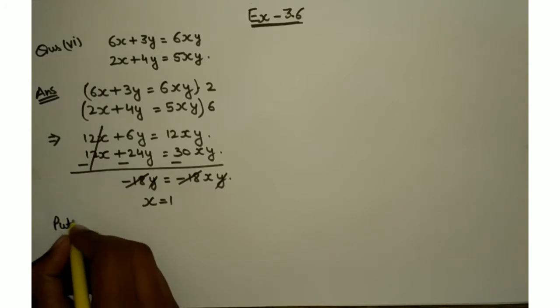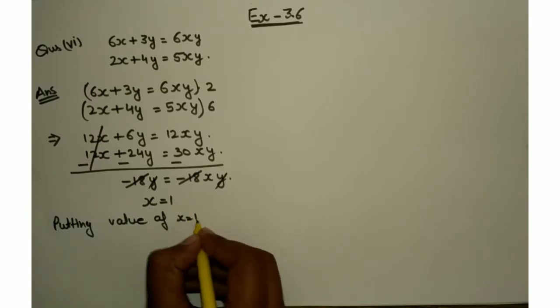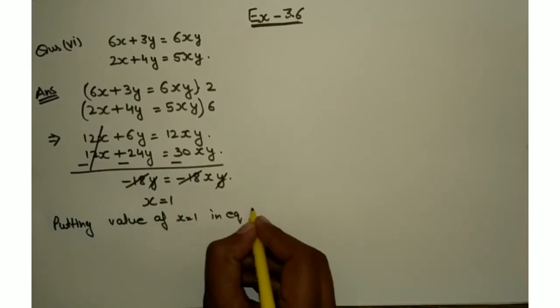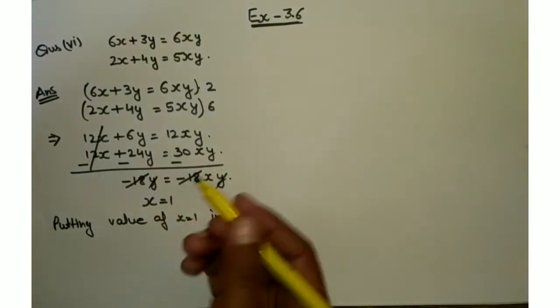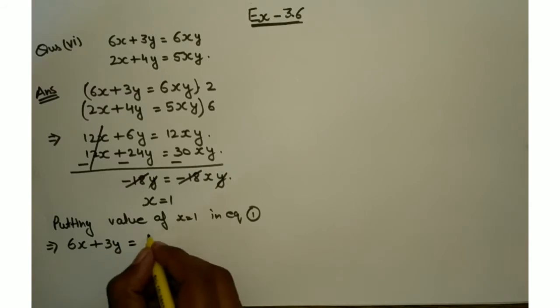Now, putting the value of x equals 1 in equation 1. So equation 1 is 6x plus 3y equals 6xy.